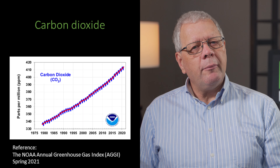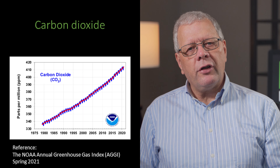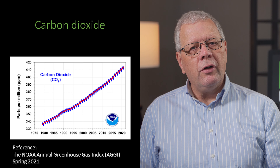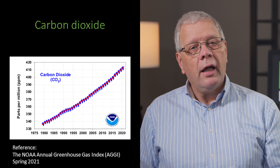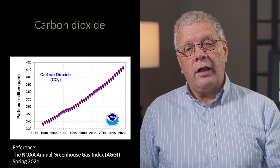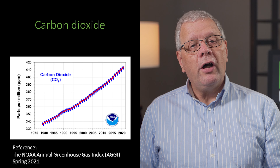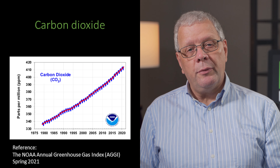Atmospheric mixing ratios of CO2 are now over 400 parts per million, compared with the pre-industrial levels of 280 parts per million. So carbon dioxide is the main greenhouse gas, and all other greenhouse gases are benchmarked against carbon dioxide, as we will see later.